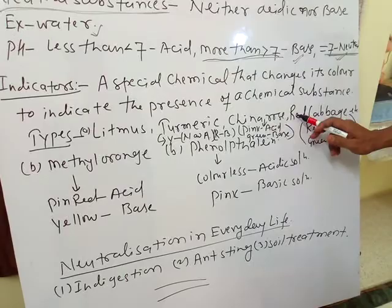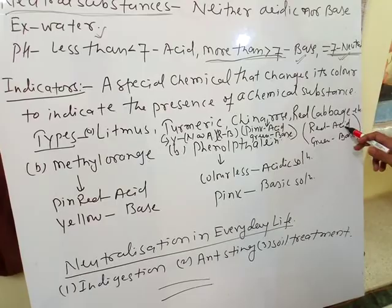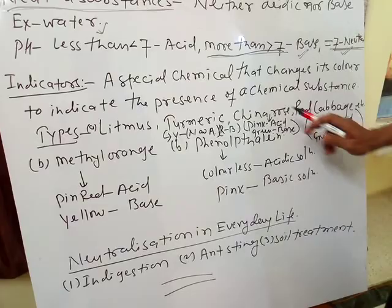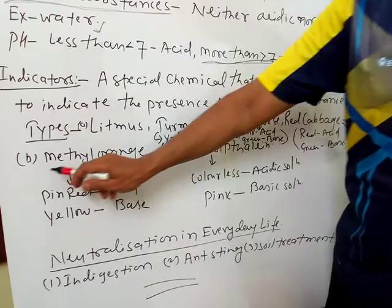Likewise, red cabbage turns red in acid and green in base. So these are the natural indicators: litmus, turmeric, china rose, and red cabbage. Second, we have the chemical indicator, also called synthetic indicator, which is prepared in the laboratory or obtained from the market.